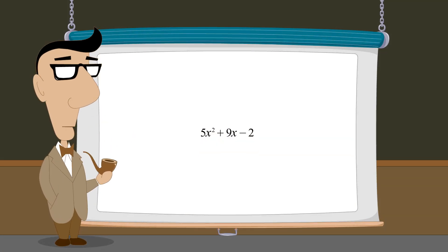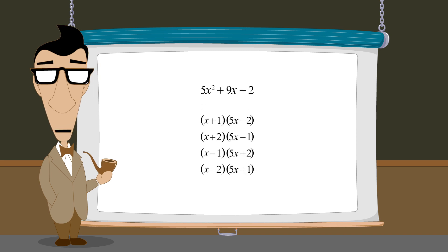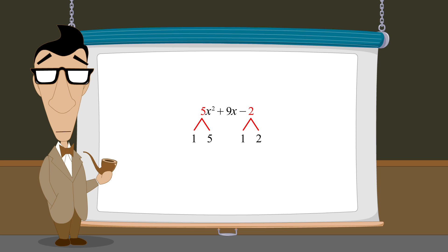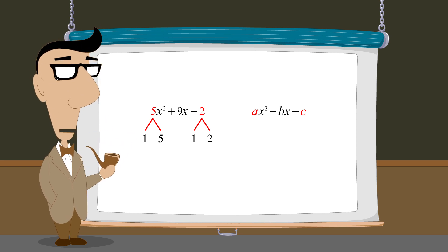In this last example, even though the coefficient of x-squared was not 1, factoring by inspection was still fairly simple, involving only four pairs of factors to check. This was because the x-squared coefficient 5 and its constant term negative 2 had a small number of factors — the only integer factors of 5 and 2 are 1 and 5, and 1 and 2. However, when the constants a and c have more factors, factoring by inspection can require a considerable amount of trial and error. In those cases, it is preferable to use methods such as completing the square or the quadratic formula, which we will introduce in the next several lectures.